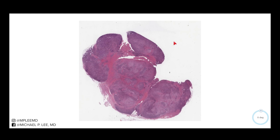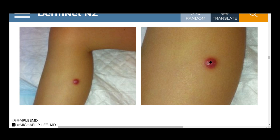So when Rosai-Dorfman involves the skin, the lesions are typically kind of pink to red in color. Sometimes it can have some yellow tinge to it, and they can take on forms of little papules, larger nodules, and also plaque form. You can see this pink to red color to it.